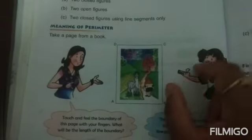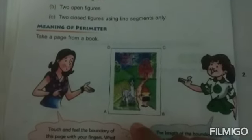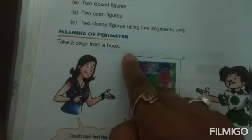Ki kitne kitne line segment aayi aapki, or unh sabhi ko plus karke aapka sum kya aaraha hai. Thik hai. To woh joh bhi sum aayega, usse kya kehette hai. Perimeter of a closed figure made up of line segment. To perimeter kya hua bita. The length of a boundary of a closed figure. The length of a boundary of a closed figure is called the perimeter of the closed figure.